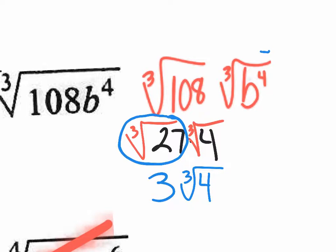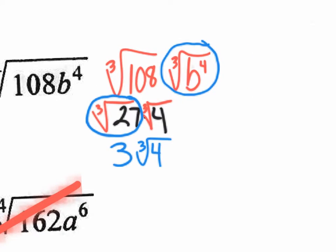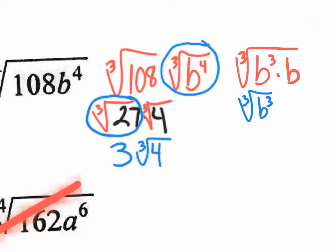We still have the cube root of b⁴ to deal with. For a variable with an exponent, you want that power to be divisible by 3, since the cube root is really the one-third power. 4 is not divisible by 3, so let's rewrite b⁴ as b³ times b¹. Now I split the cube root: the cube root of b³ is just b, and the cube root of b you leave as the cube root of b.